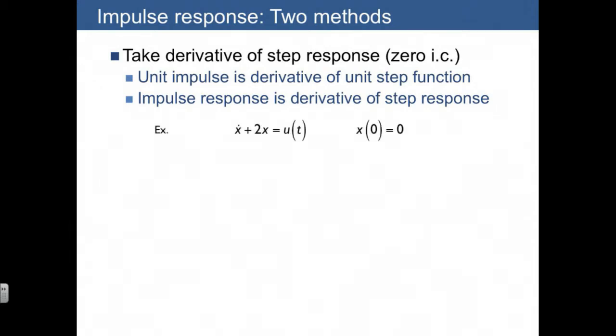Here's a quick example: x dot plus 2x equals u, where u is an input function which can be a step or an impulse.